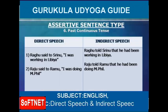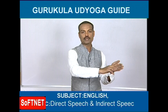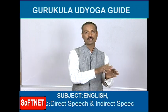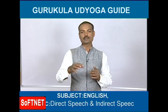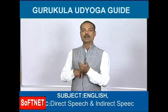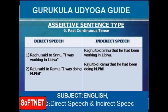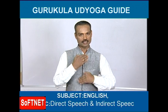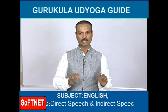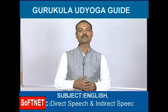Second example of past continuous: 'Raju said to Ramu, I was doing MPhil.' Raju and Ramu are talking, you hear and report it. 'Said to' becomes 'told'. 'I' (Raju) becomes 'he'. Past continuous 'was doing' changes to past perfect continuous 'had been doing'. Answer: 'Raju told Ramu that he had been doing MPhil.' In today's class we have learned up to past continuous — six tenses completed. In the next class we will learn from past perfect tense.